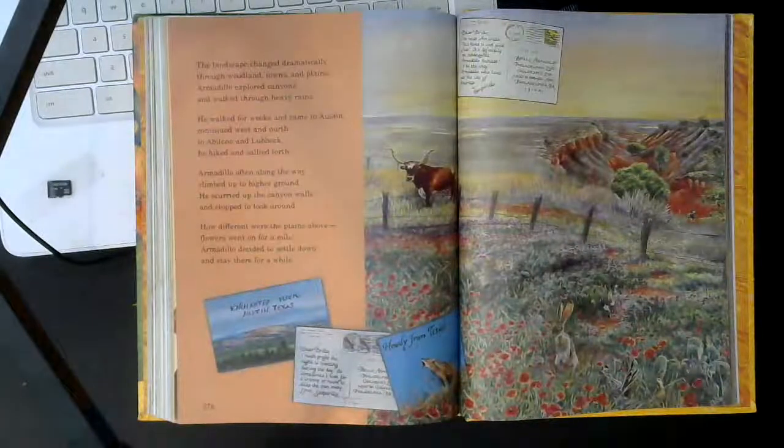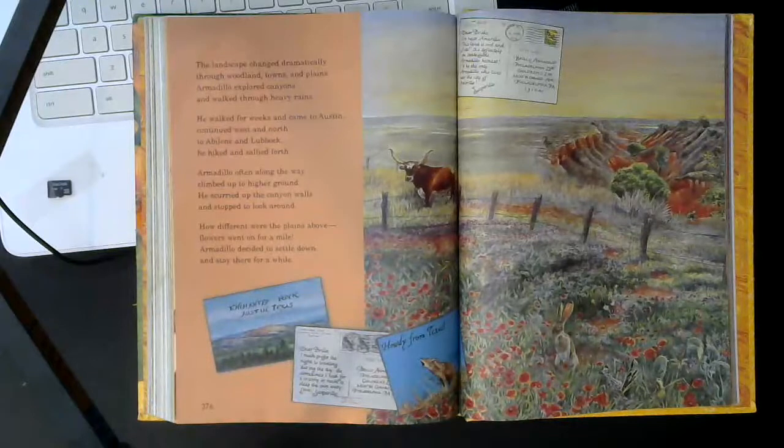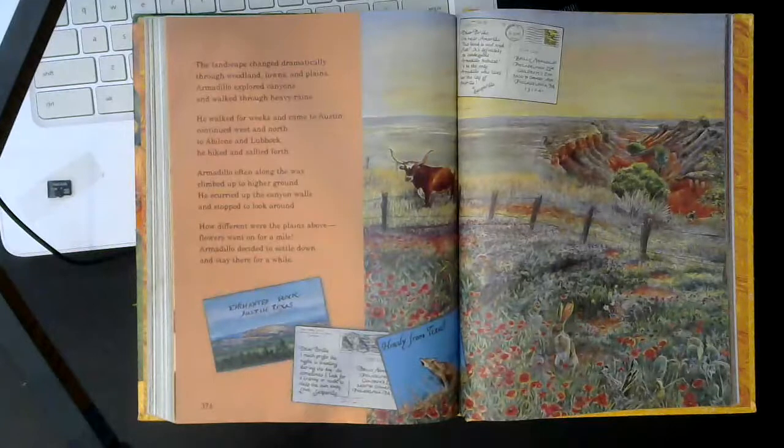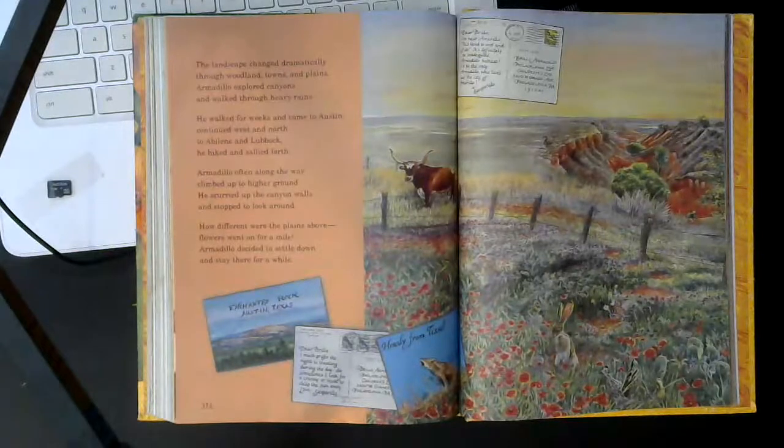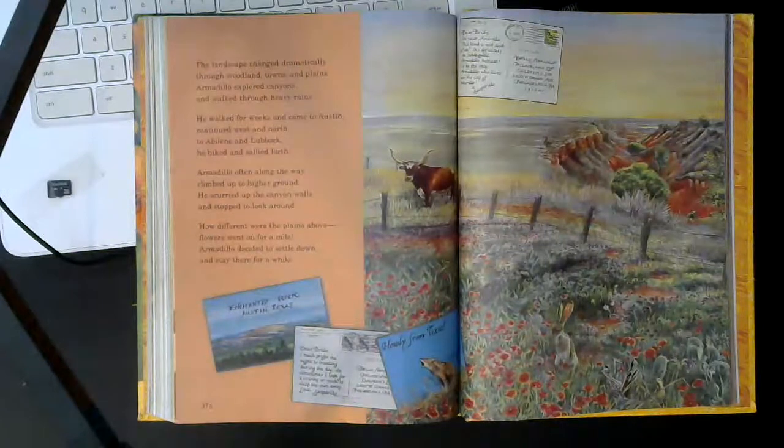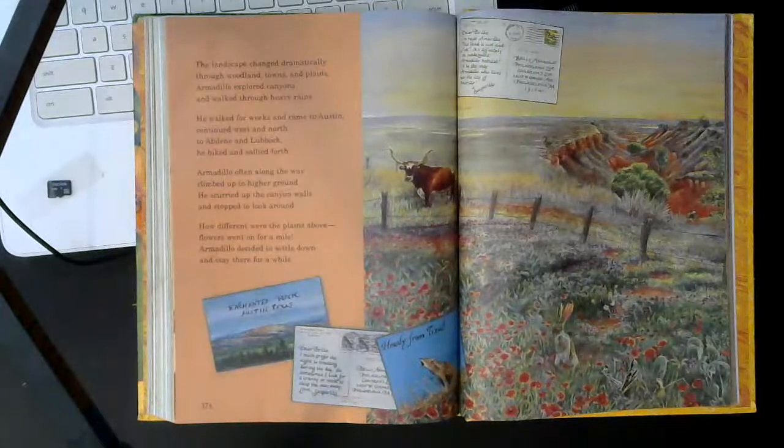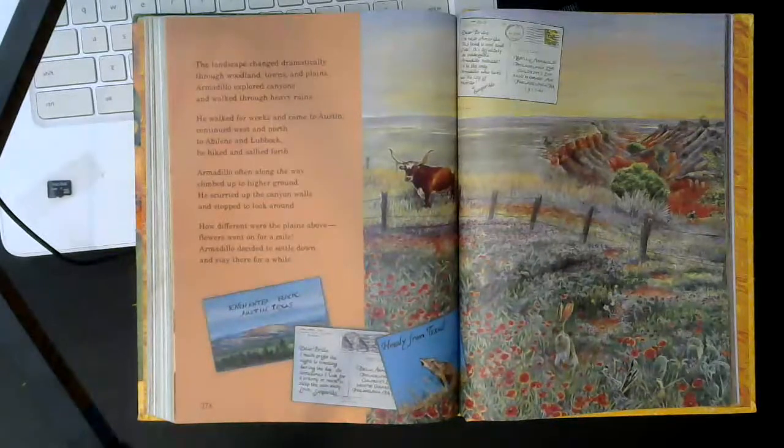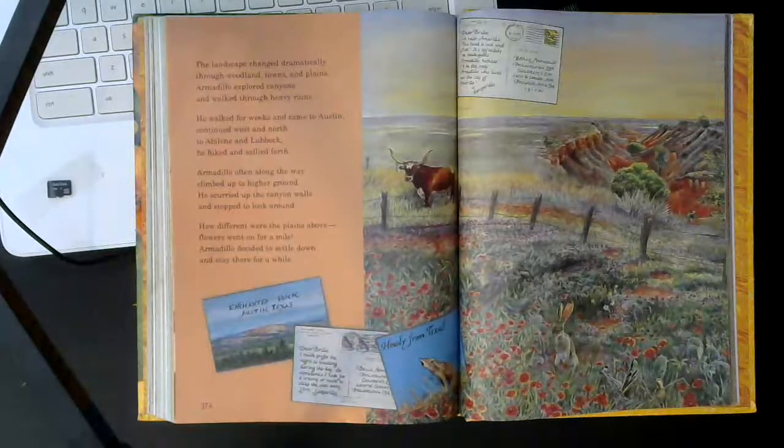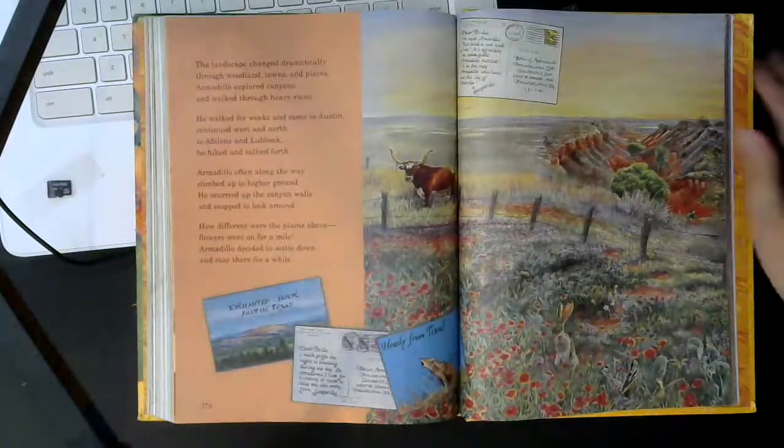The landscape changed dramatically through woodland towns and plains. Armadillo explored canyons and walked through heavy rains. He walked for weeks and came to Austin, continued west and north to Abilene and Lubbock. He hiked and sallied forth. Armadillo often along the way climbed up to higher ground. He scurried up the canyon walls and stopped to look around. How different were the plains above? Flowers went on for a mile. Armadillo decided to settle down and stay there for a while.